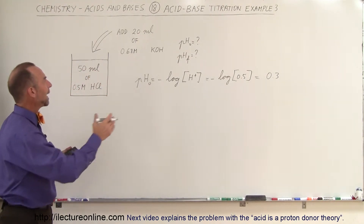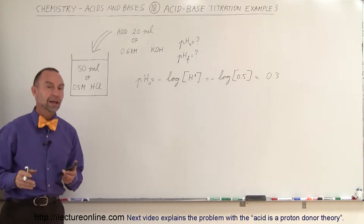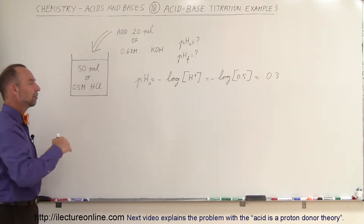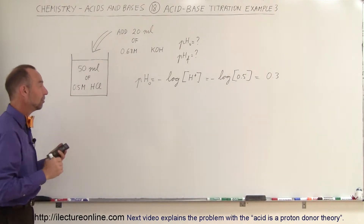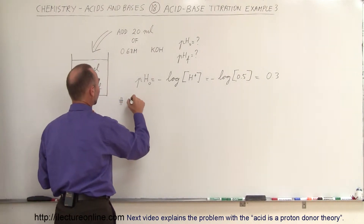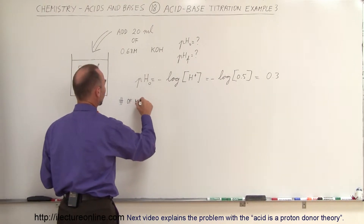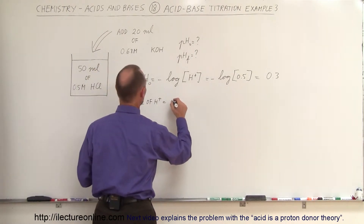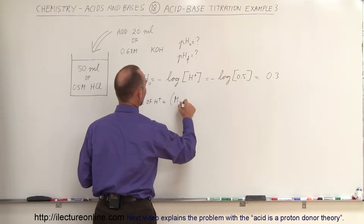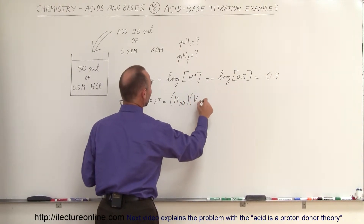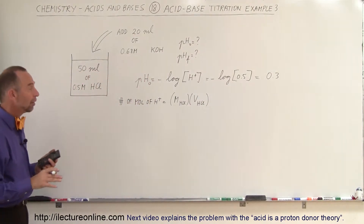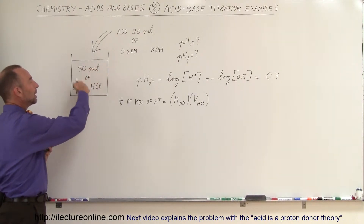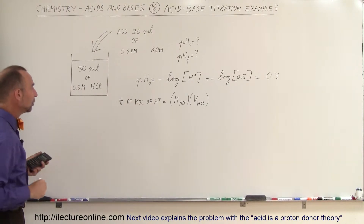Now, what will the pH be after we add 20 milliliters of 0.68 molar potassium hydroxide? To find the final hydrogen ion concentration, we first figure out how many moles of hydrogen ions were in the original solution. The number of moles of hydrogen ions equals the molarity of the hydrochloric acid times its volume, since HCl fully dissociates in water.